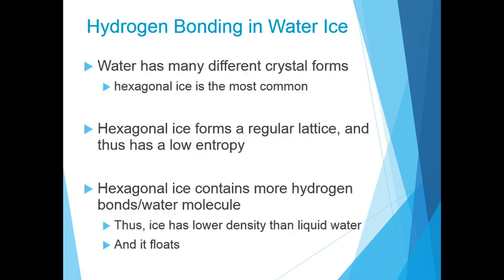Water has many different crystal forms. Hexagonal ice is one of the most common of them. Hexagonal ice forms a regular lattice and thus has a very low entropy as compared to liquid water. Hexagonal ice contains more hydrogen bonds per water molecule. Thus,